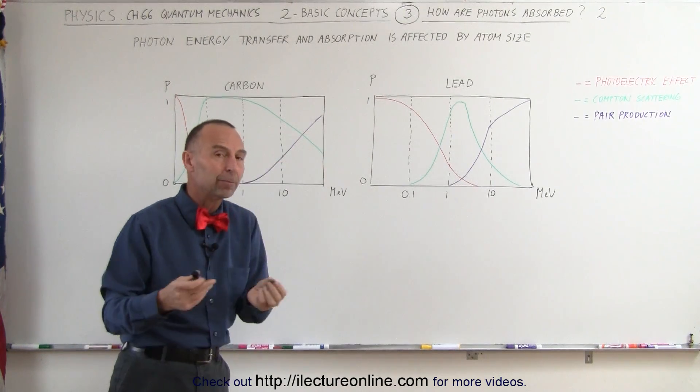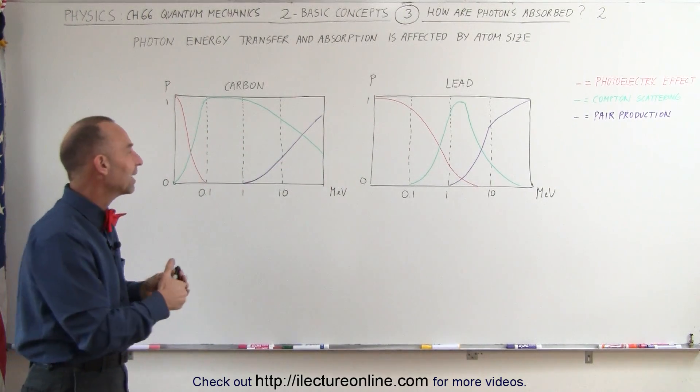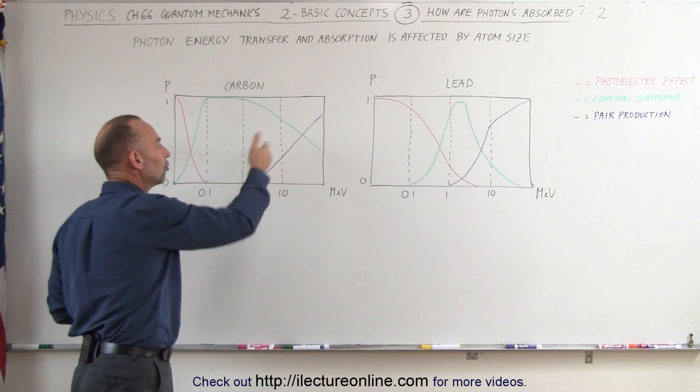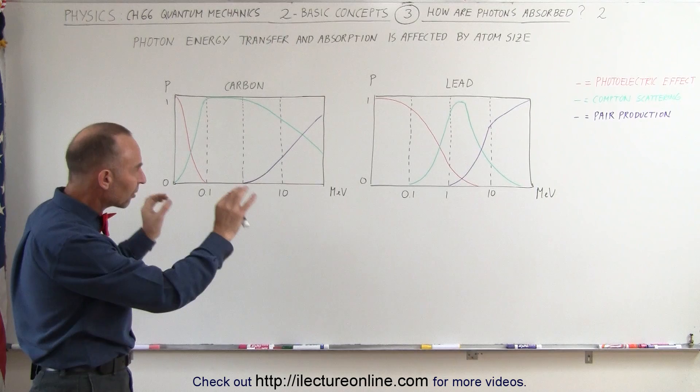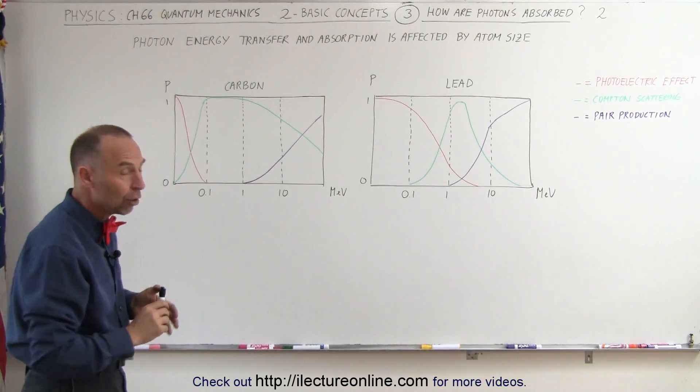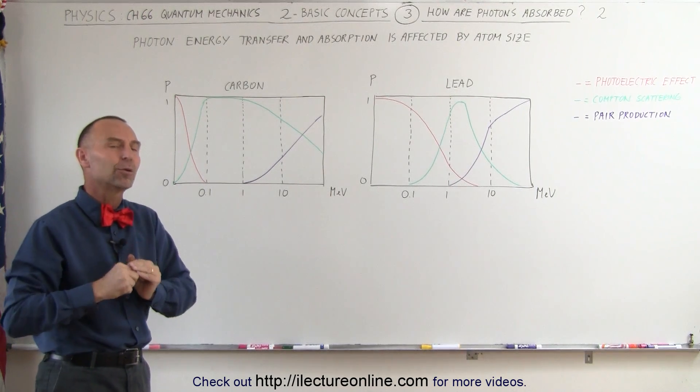And finally the purple lines represent pair production where all the energy is taken to produce a pair of particles that happens of course at very high energies. But when you look at the two boxes here and the two sets of curves, you see that there's some significant difference between them.